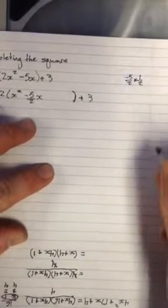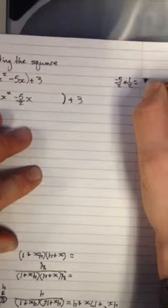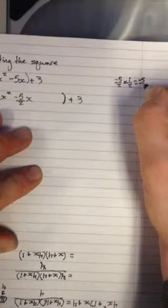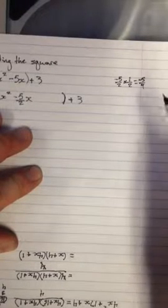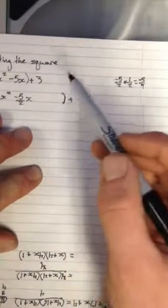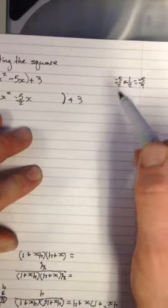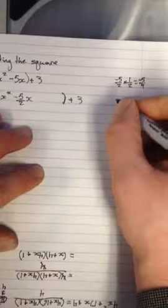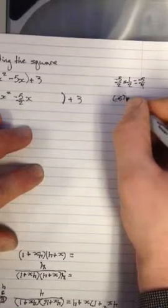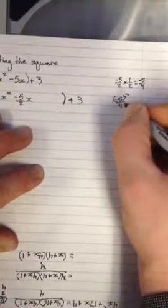And so that's going to give me negative 5 over 4. And now I square it. So I need to square this term - I'm completing the square, I need to make a square with this. I take half of it and then I square it. So squaring that is going to give me negative 5 squared over 4 squared, which is 25 over 16.